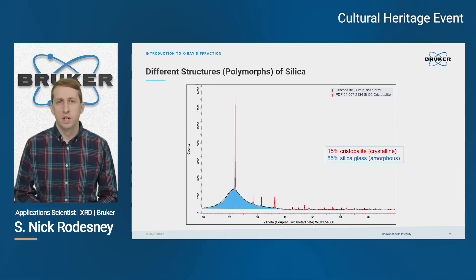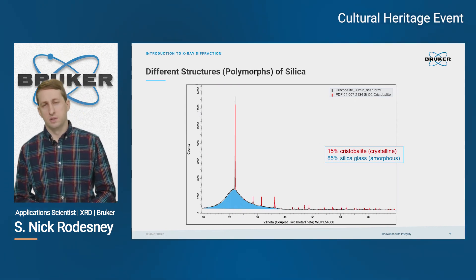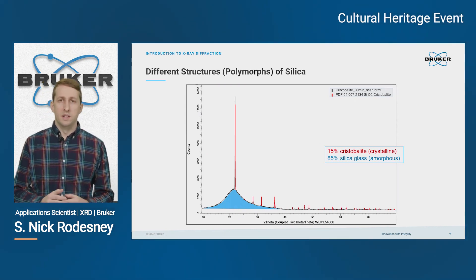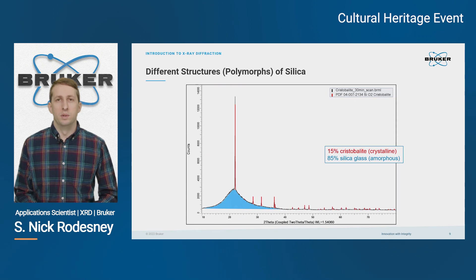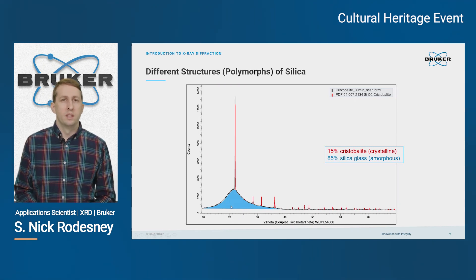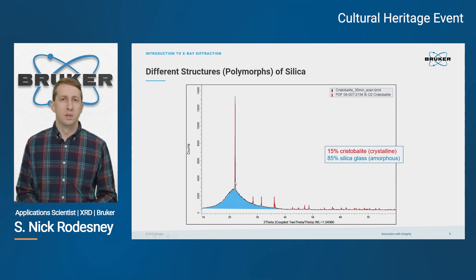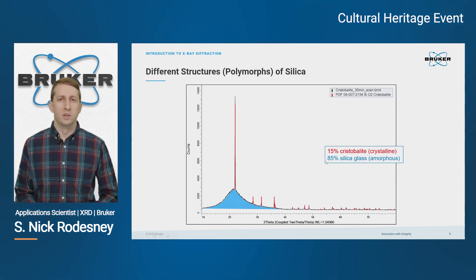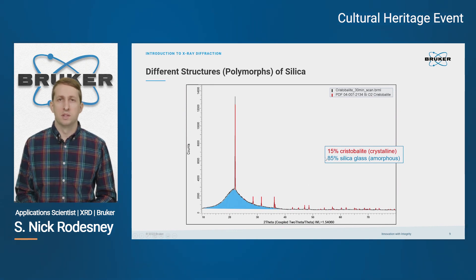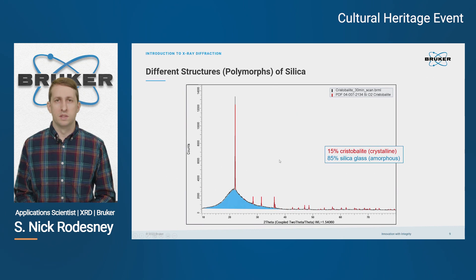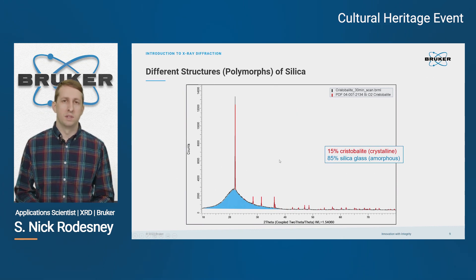And this is something that you can quantify, and there are a couple of different industries where this is very important. If you take the area of the amorphous contribution represented here by blue and the crystalline contribution represented in red, you can make a ratio and calculate how much is amorphous and how much is crystalline. In this example, it's about 85% amorphous and 15% crystalline.